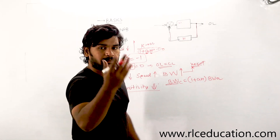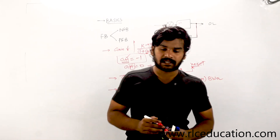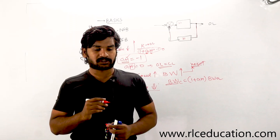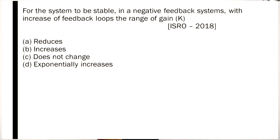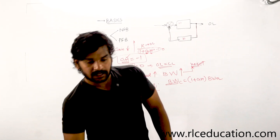Now let us look at some MCQs asked earlier on this topic. The first question is: for the system to be stable in a negative feedback system, with the increase of negative feedback, the range of gain K — what happens? By using negative feedback, the gain of the system will decrease. So option A — 'reduces' — is the right answer for this question.